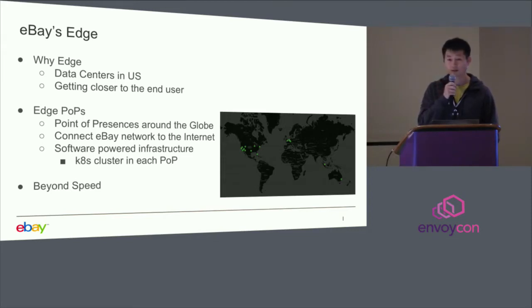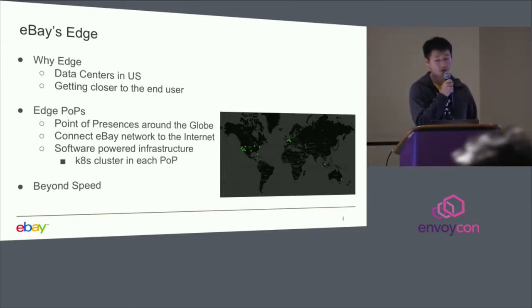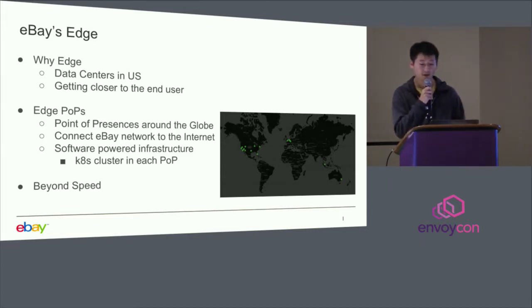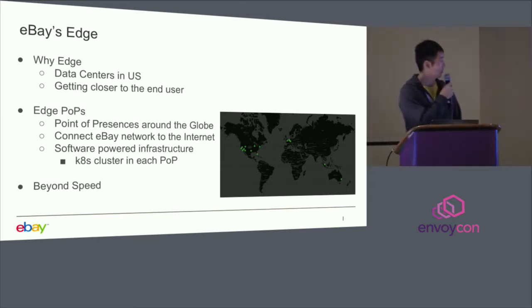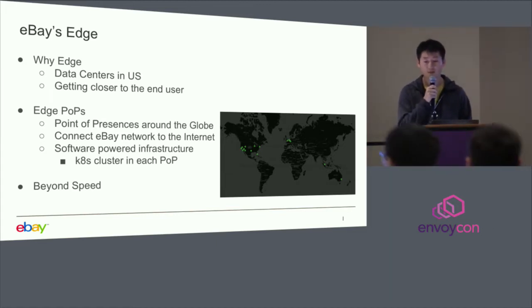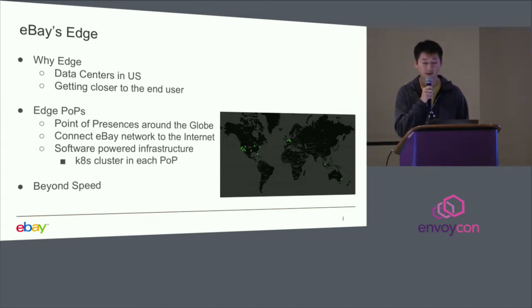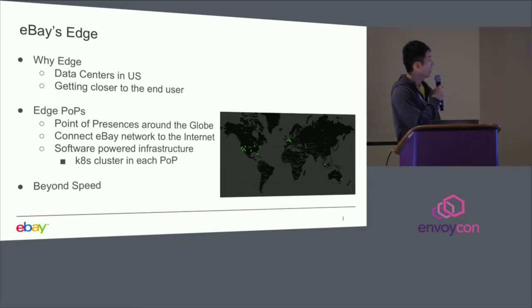Why edge? In the past eBay only had data centers in the US. As traffic grew from global users, we realized having infrastructure that can deliver content faster to end users is really critical. It's not just about ensuring better user experience for people visiting our website, but that also translates into more revenue and more GMV for an e-commerce company like eBay. All that translates into getting closer to the end user.